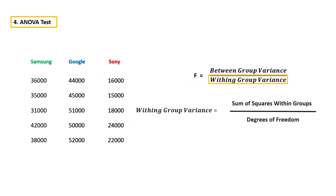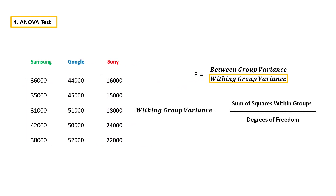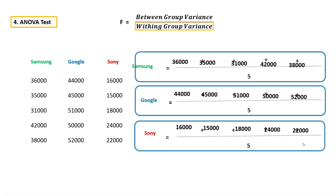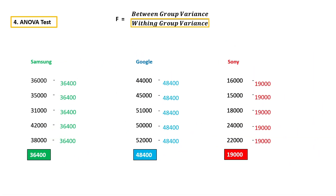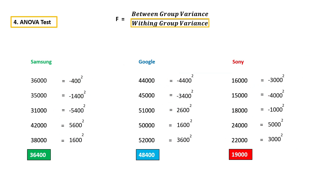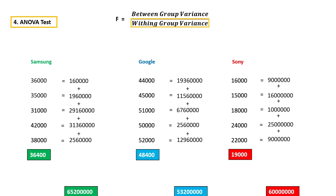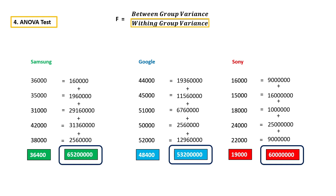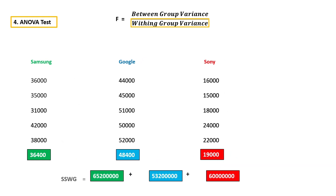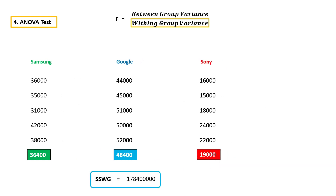First, let's calculate within group variance. To calculate within group variance, we have to divide sum of squares within groups by its degrees of freedom. To calculate sum of squares within group, take the mean of each group and subtract each and every value from its mean, square the difference, and add them together. You will get sum of squares within group for each individual group. Finally, we have to add all these values together.